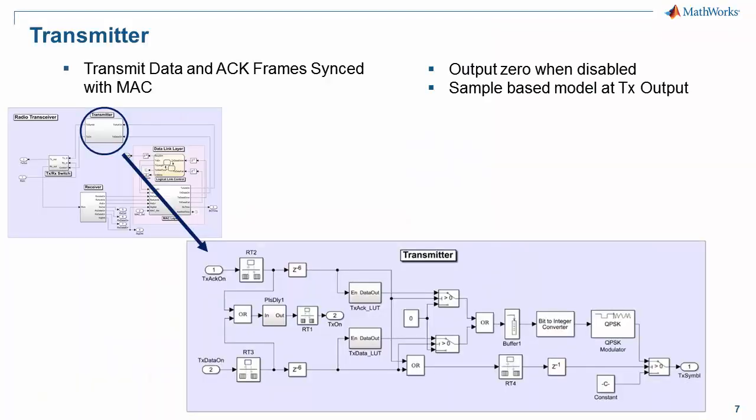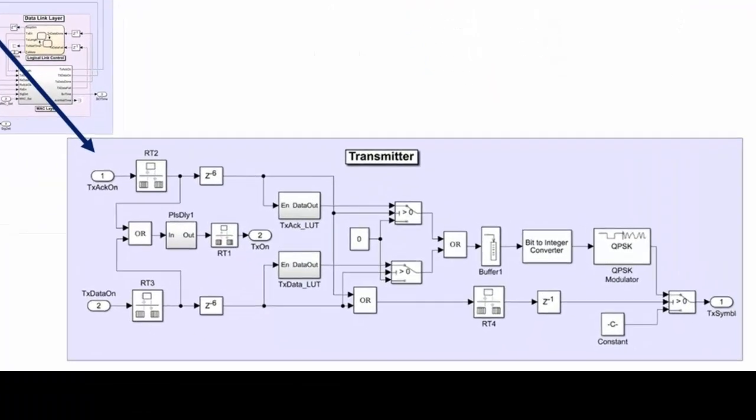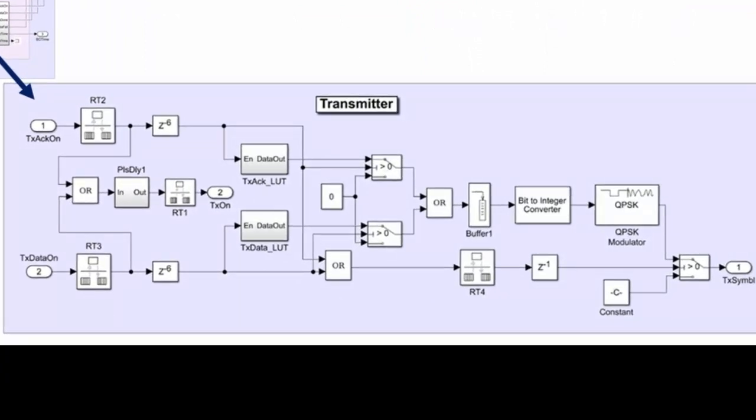We now look at the transmitter in the radio node. Based on the channel status, the MAC layer sends the control signal to this TX block to transmit either a data frame or an acknowledgement frame. The frame contents are loaded in the lookup tables, and the contents can be changed in the workspace. The output of this block is a complex baseband IQ signal.